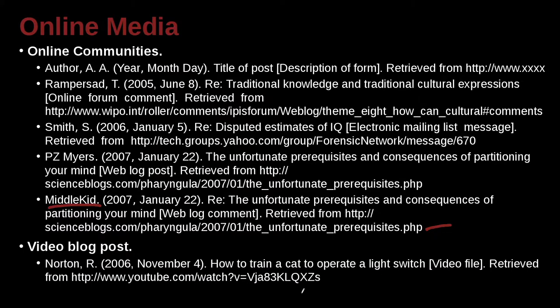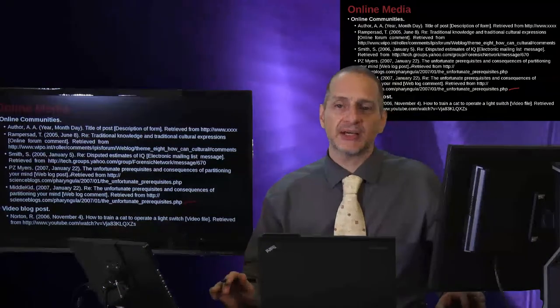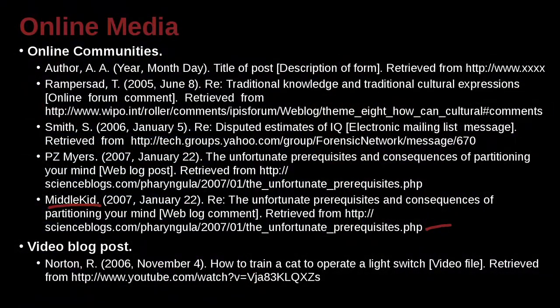How about a video on YouTube? Very similar. We have the name if we have it. It's very possible that the person doesn't have a regular name — they're using a handle, a nickname, or something else. But if they do have a name and you can see that it's a family name and a first name, then you reverse them and use a comma. If not, you don't. In this case, we do have a name: Norton is the family name, R is the given name. 2006, November 4th — that's the year, the month, and the day it was posted online. Not the day you saw it, but the day it was posted. How to train a cat to operate a light switch, and this is a video file. Retrieved from here — this is the URL. So important to remember: that date is not the day you access it, but the day it's posted, because later other people are going to be looking for that, and they want to be able to find which one it is you looked at.